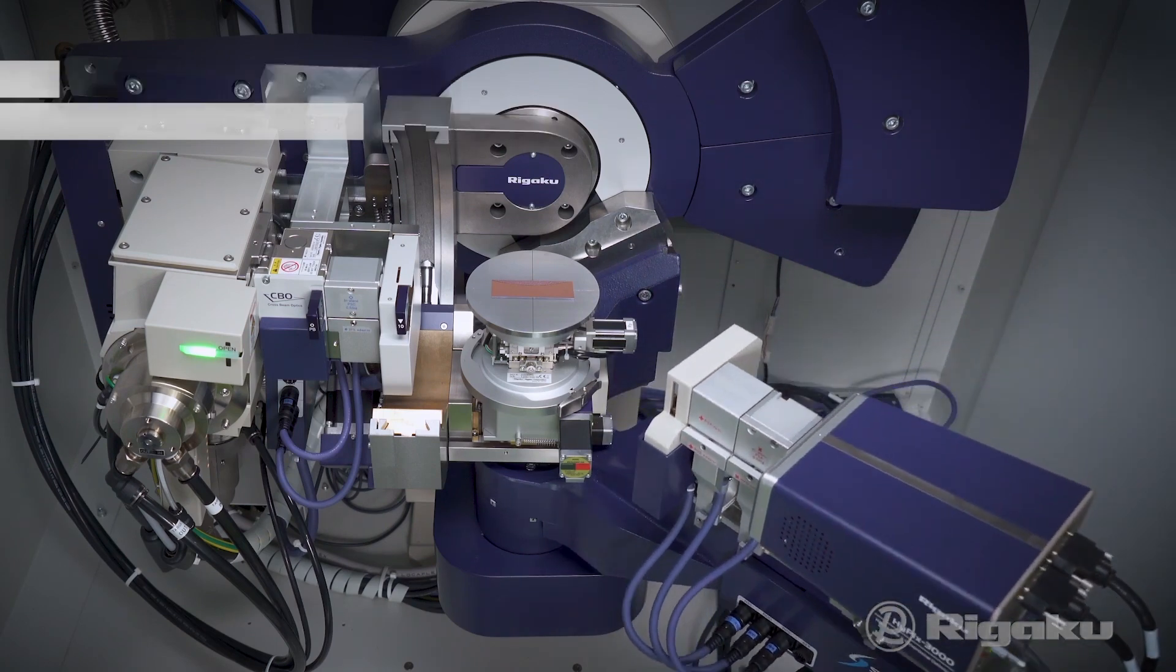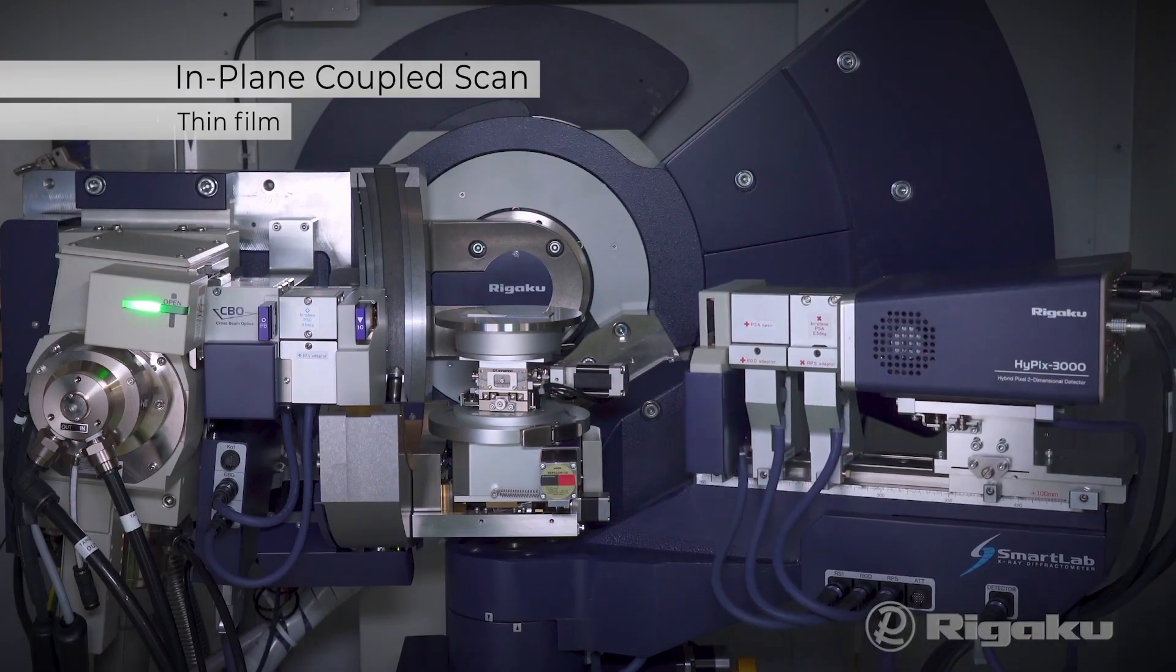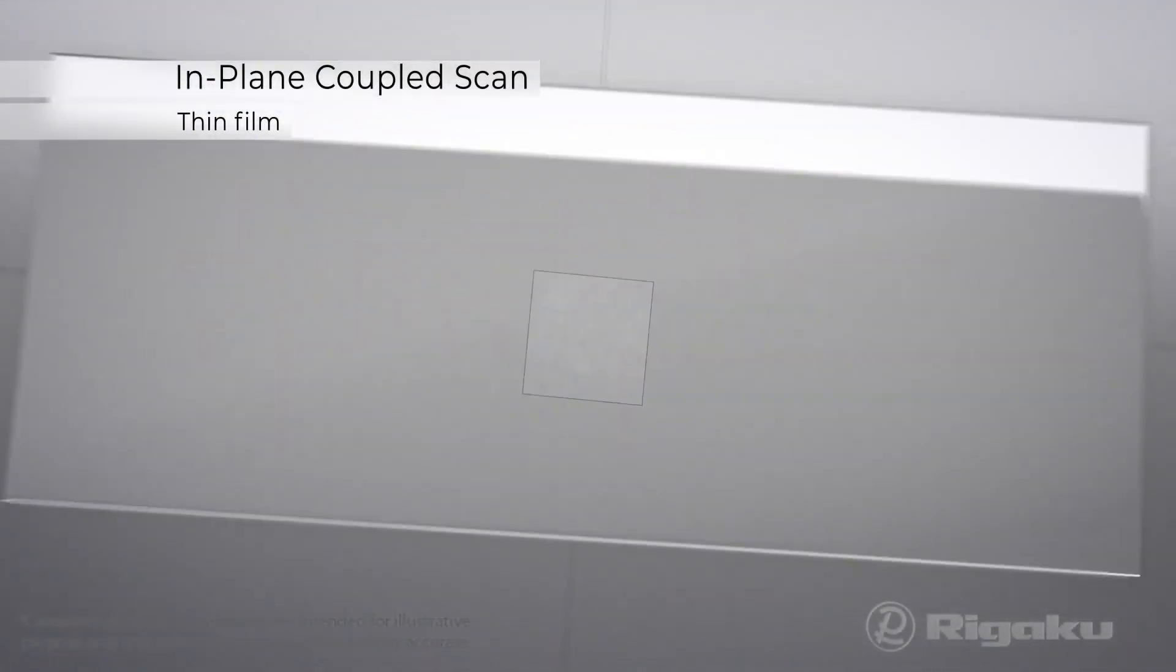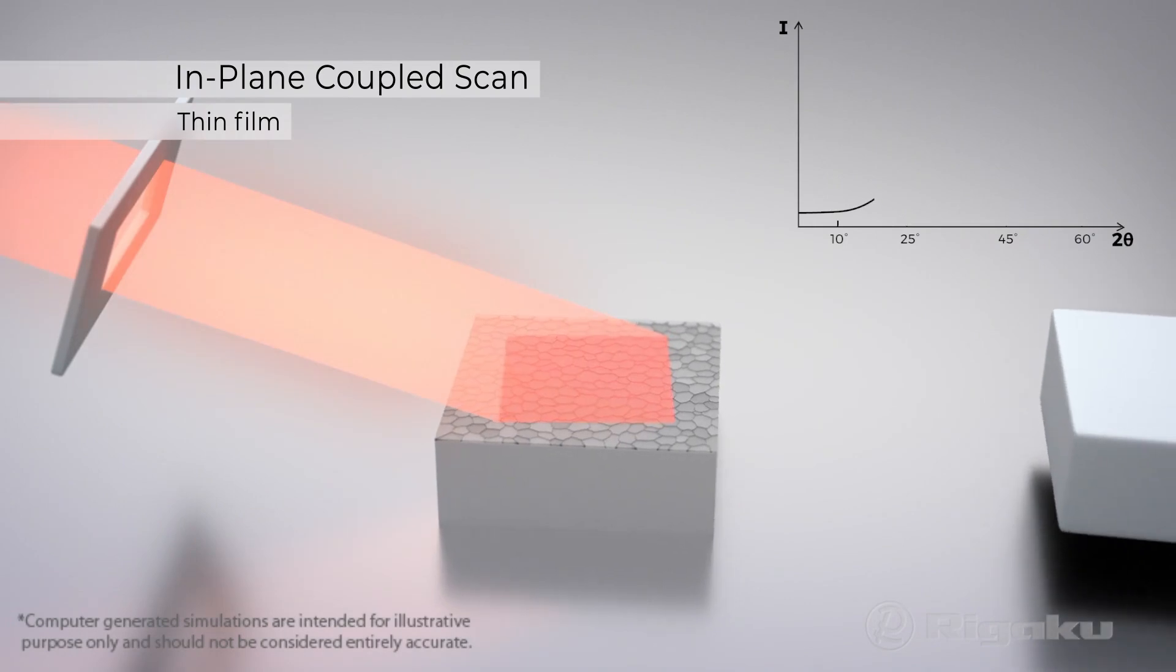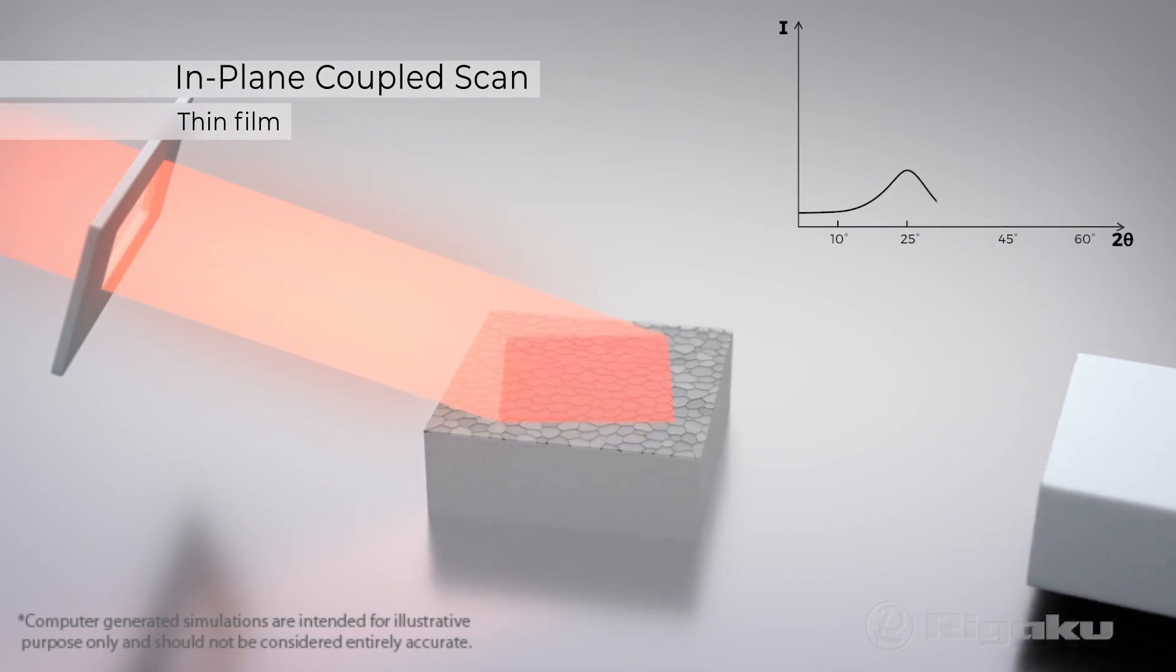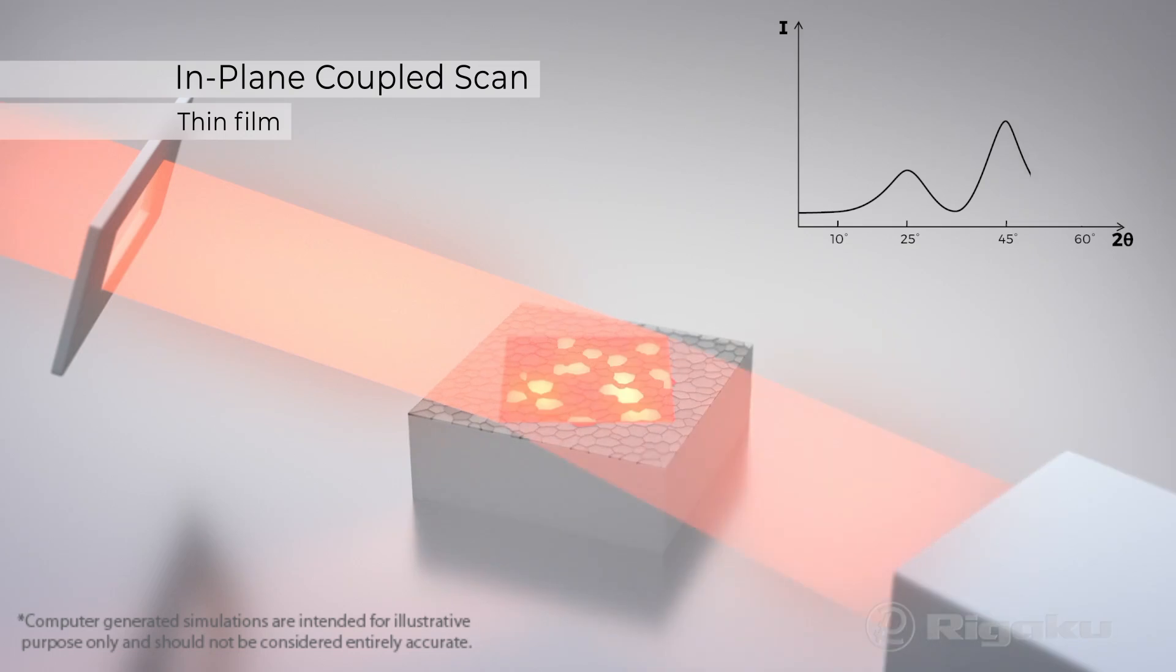SmartLab's fifth in-plane horizontal axis can measure in the plane of the sample surface for thin films and textured materials where conventional vertical scanning is not effective. Observe diffraction peaks from ultra-thin films less than a single nanometer thick.